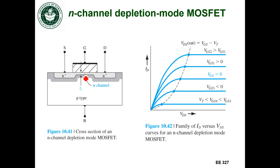So in order to turn off that channel, to remove that inversion layer, I actually have to apply a negative gate to source voltage. So here's a negative, a more negative gate to source voltage.